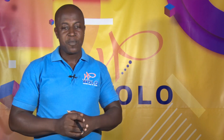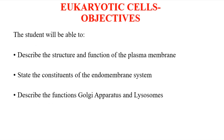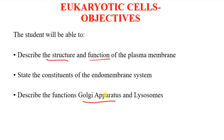In our previous session we discussed a few things about the structure, talking about the interior. Now there are a number of things we ought to be abreast with when it comes to the eukaryotic cell. This session looks essentially at the plasma membrane and the endomembrane system. Our objective today is to describe the structure and function of the plasma membrane, the Golgi apparatus, and the lysosomes.